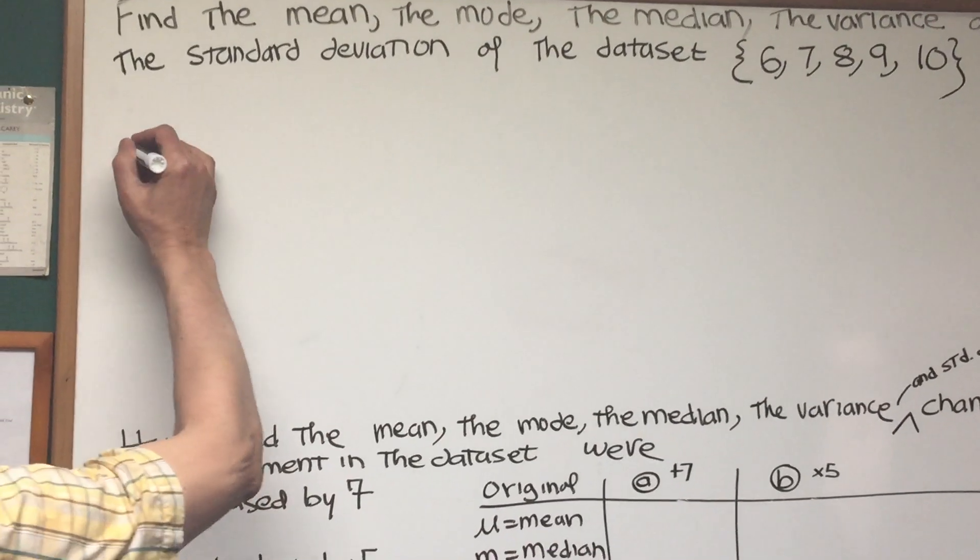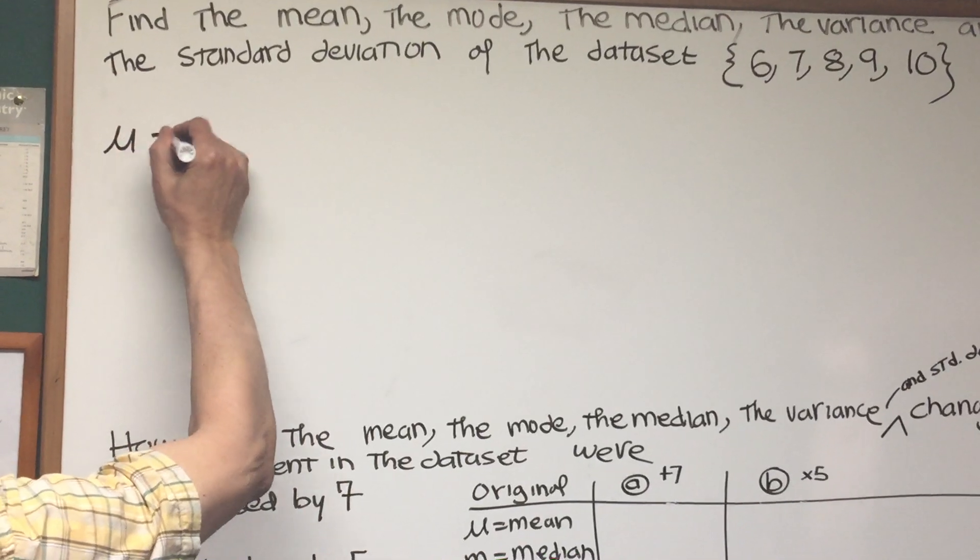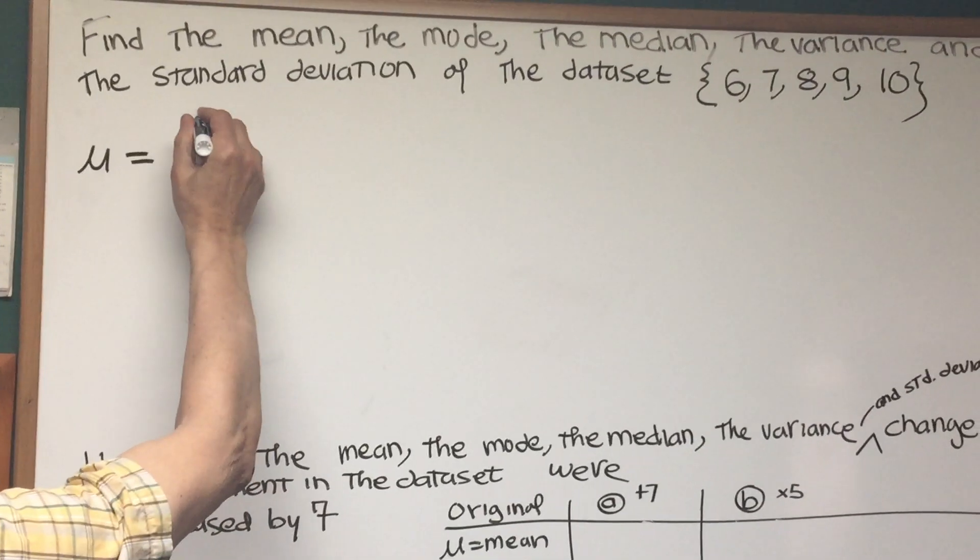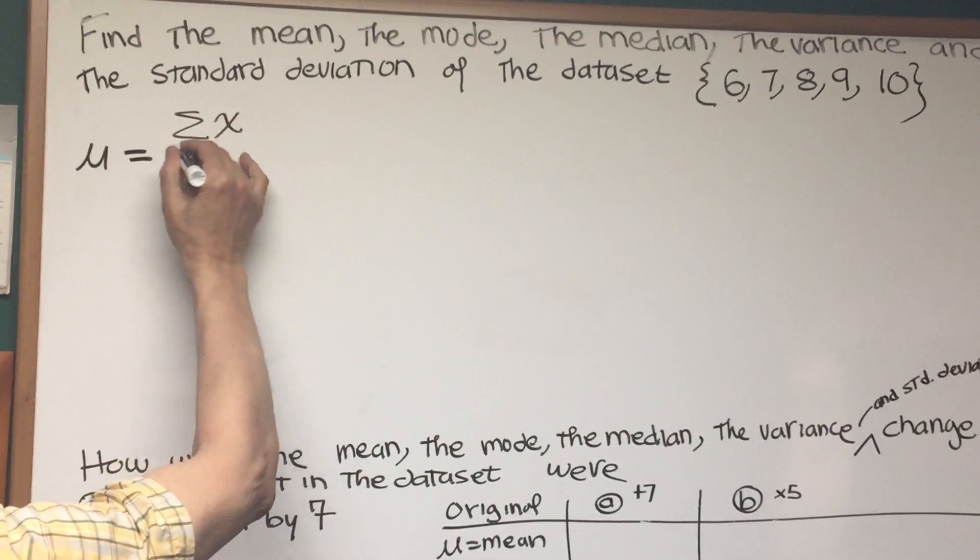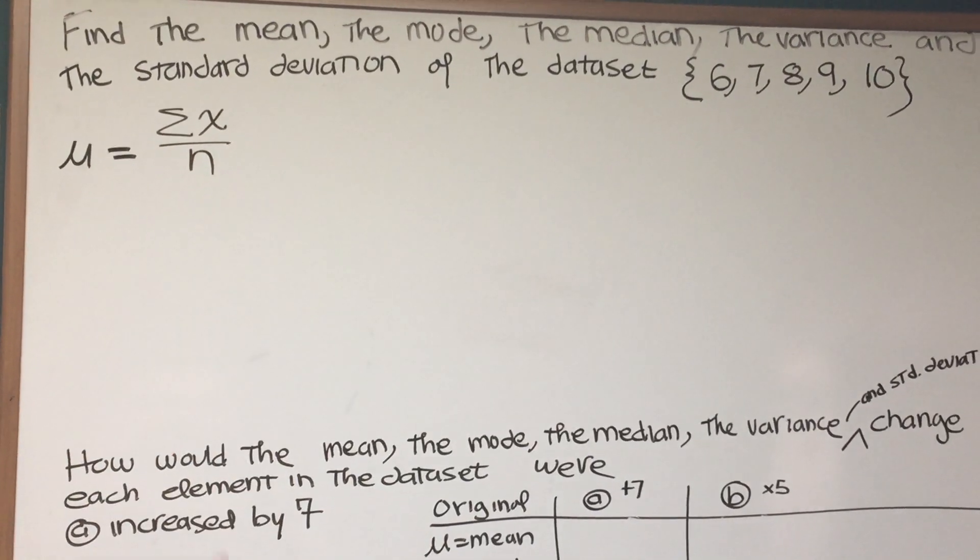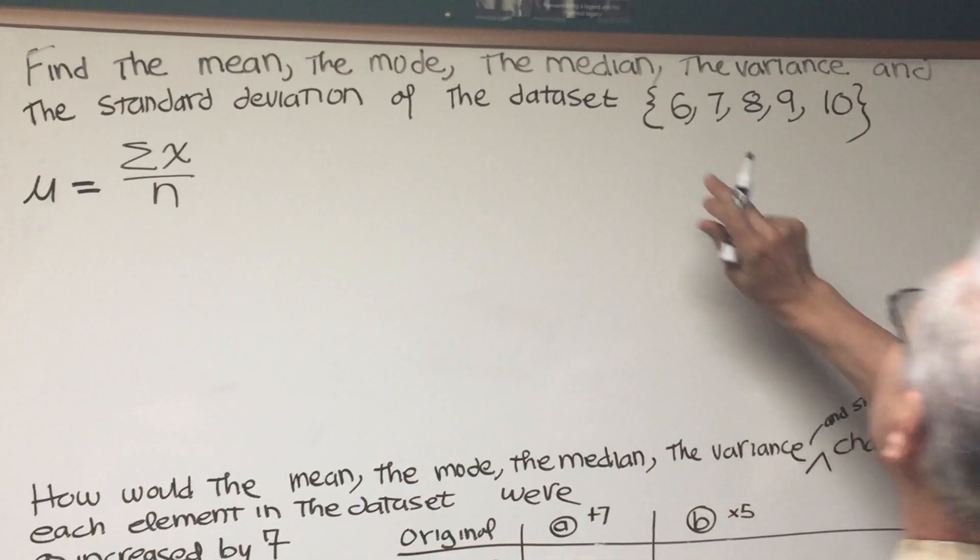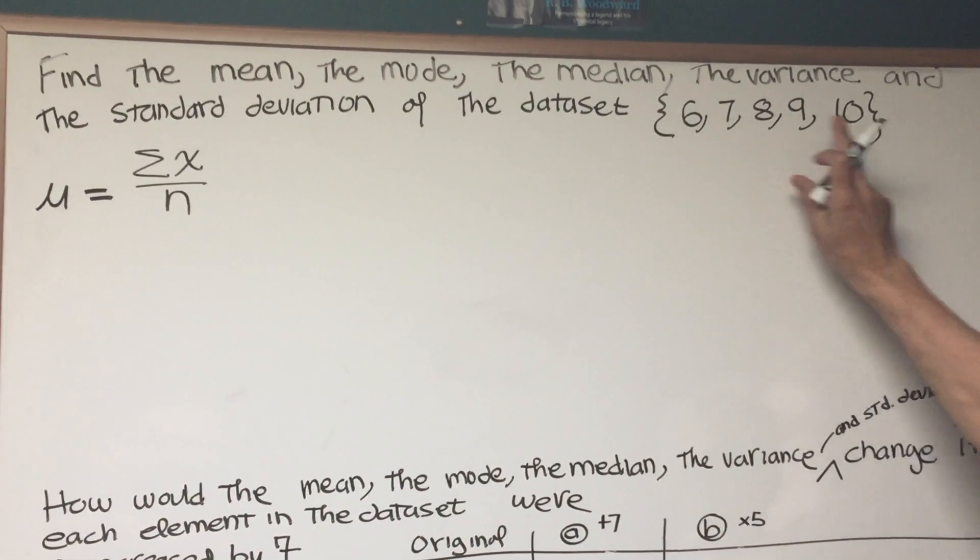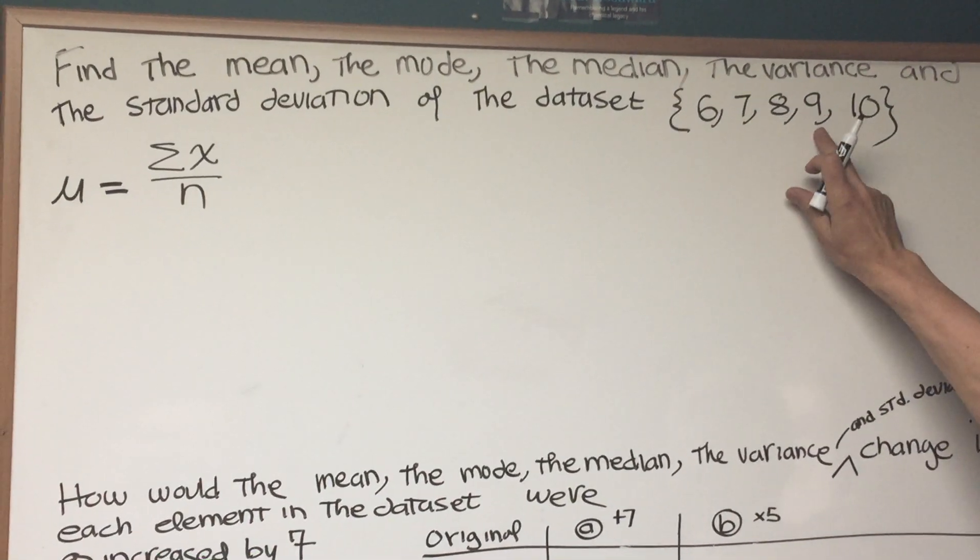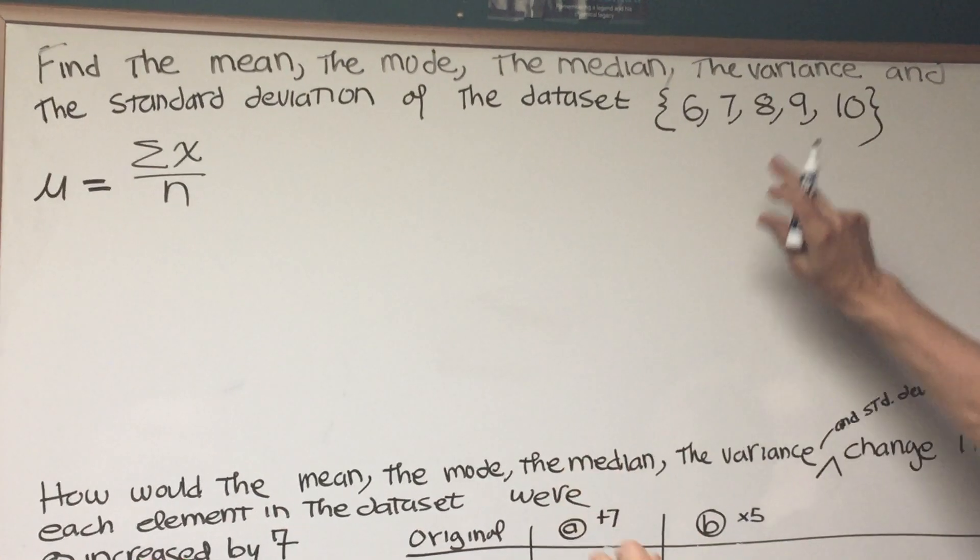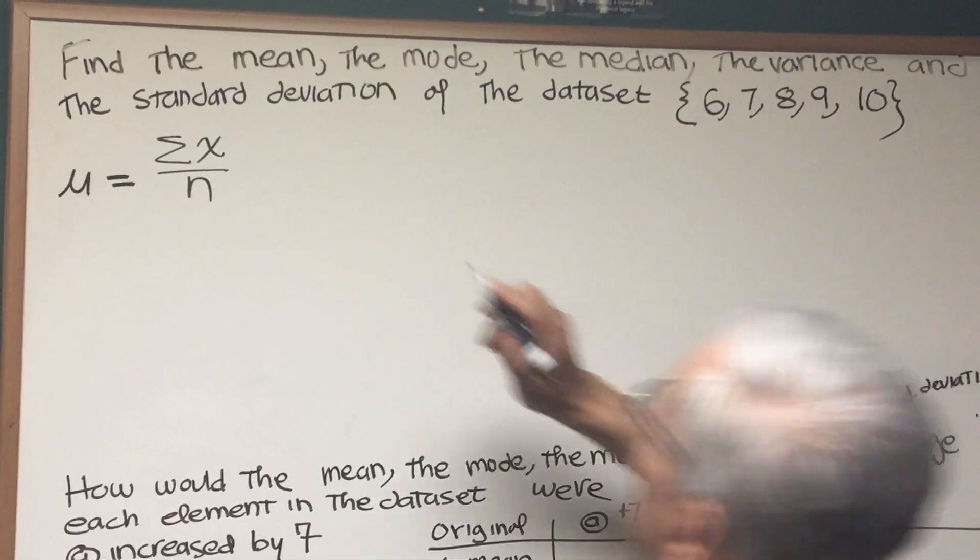I think we all know what the mean is. The symbol of that is mu, the Greek symbol μ, and it's equal to the sum of the scores divided by the number of scores. So all we have to do is add the number of scores here. Let's see, 6 and 10 is 16, 7 and 9 is 16, 16 and 16 is 32, 32 plus 8 is 40.